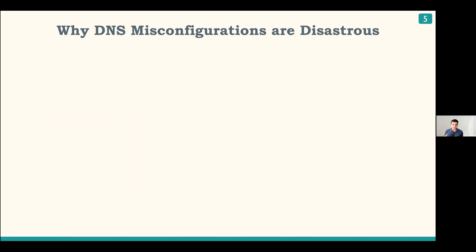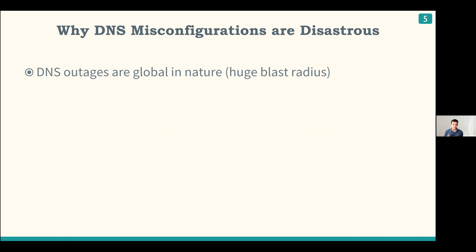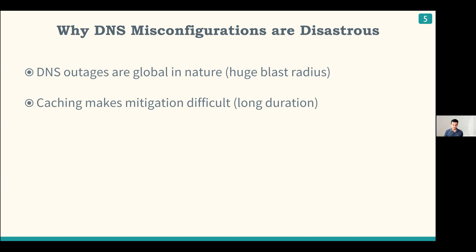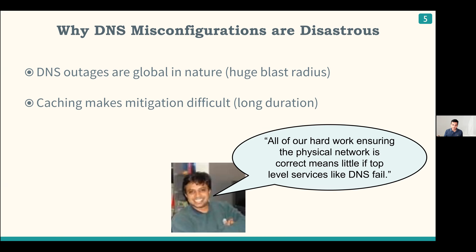There are two takeaways from this experience about why DNS misconfigurations are often disastrous. First, DNS is inherently global in nature — if you can't look up the IP address for a service, you lose connectivity worldwide, giving DNS a large blast radius. Second, resolving DNS outages is extremely tricky. The Azure outage took 20 hours primarily because DNS relies heavily on caching, including negative caching, meaning when storage became unreachable, everybody cached that fact. As my mentor noted, all hard work ensuring the physical network is correct means little if top services like DNS fail.